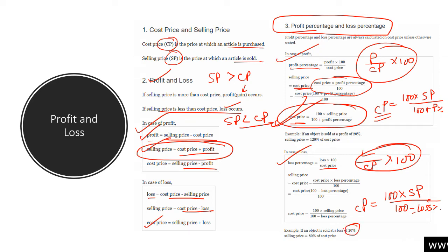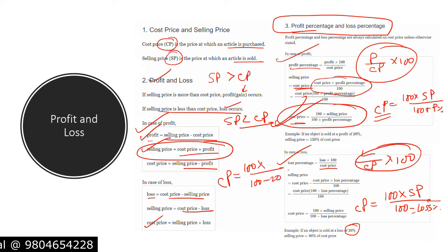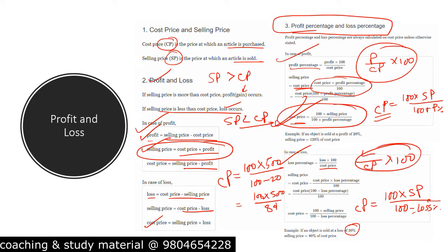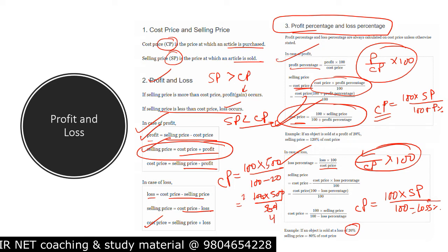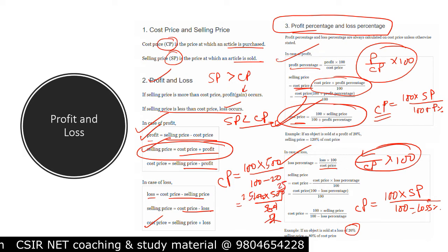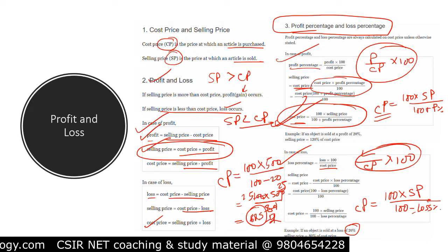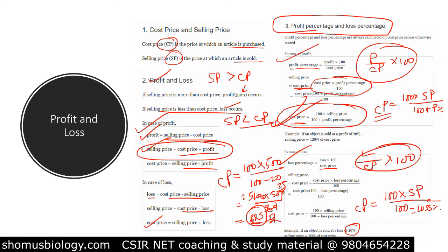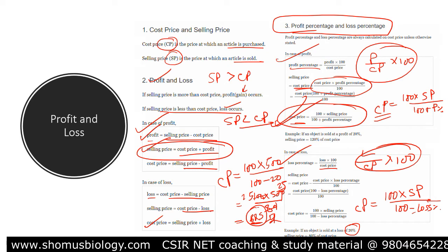Example: if an object is sold at a loss of 20 percent, the cost price equals 100 × SP divided by (100 − 20). If the selling price was 500, then CP = 100 × 500 / 80 = 625. So cost price will be 625 rupees; with a selling price of 500 rupees and a loss of 20 percent, this is how you calculate directly with the formula.